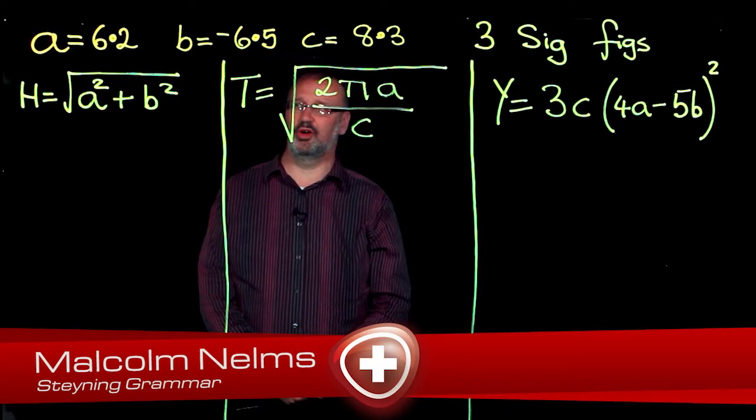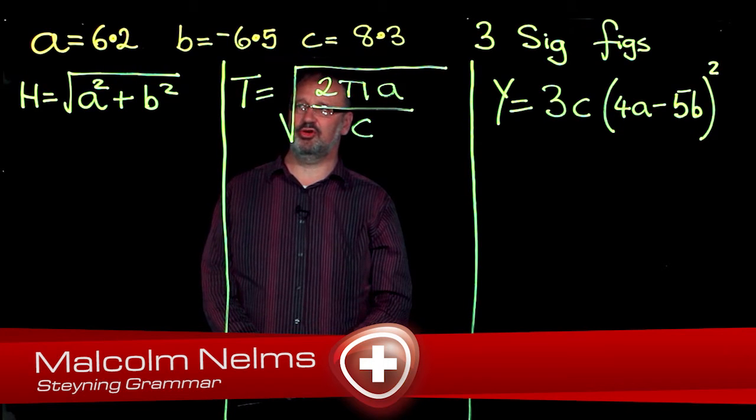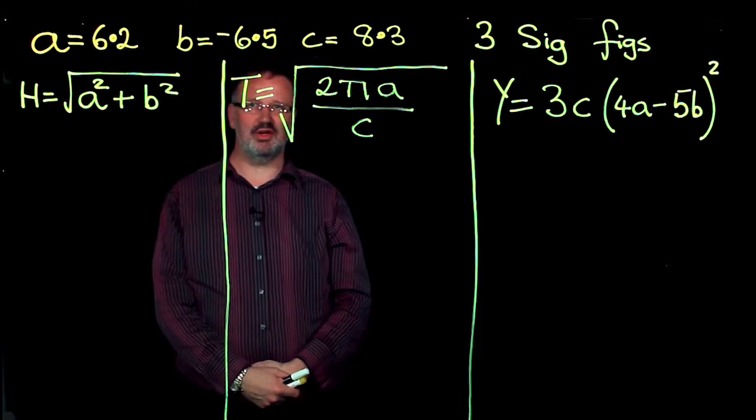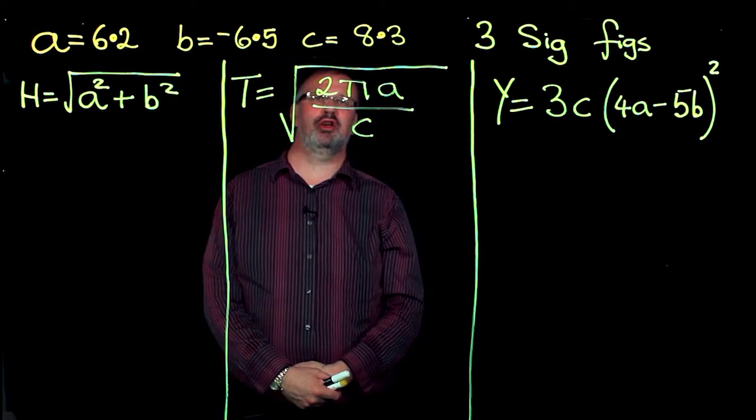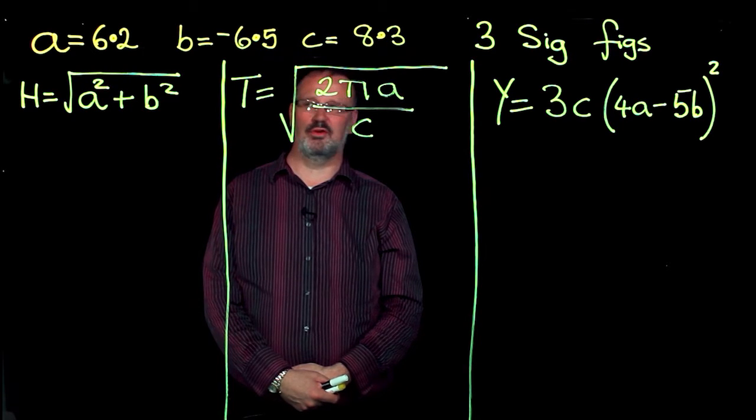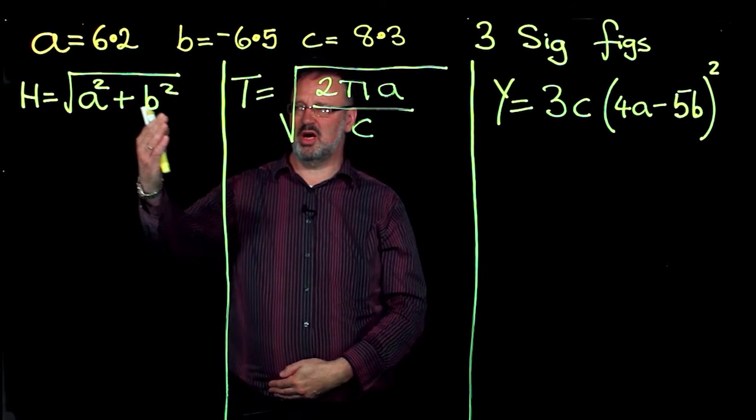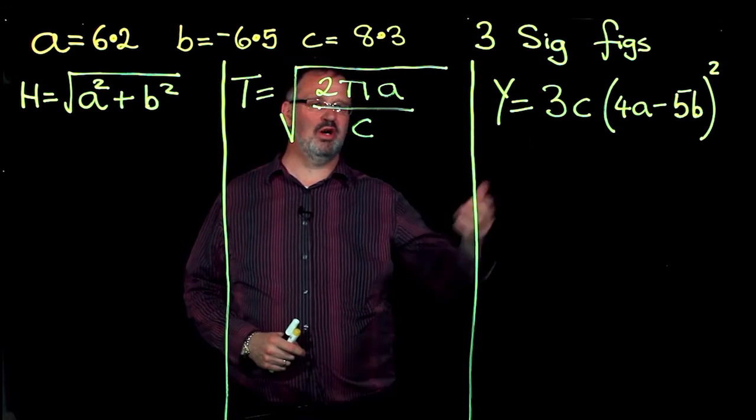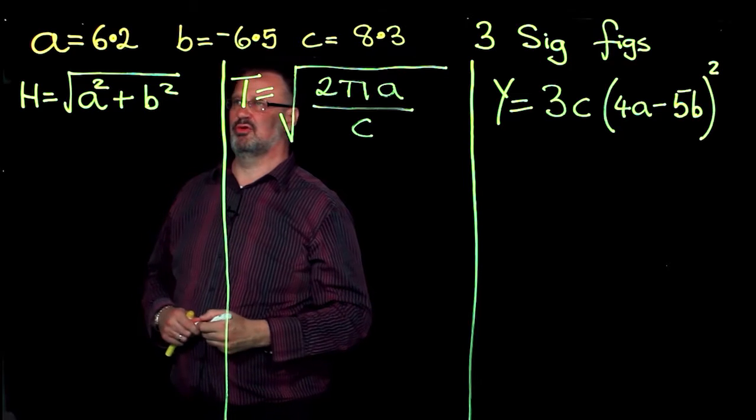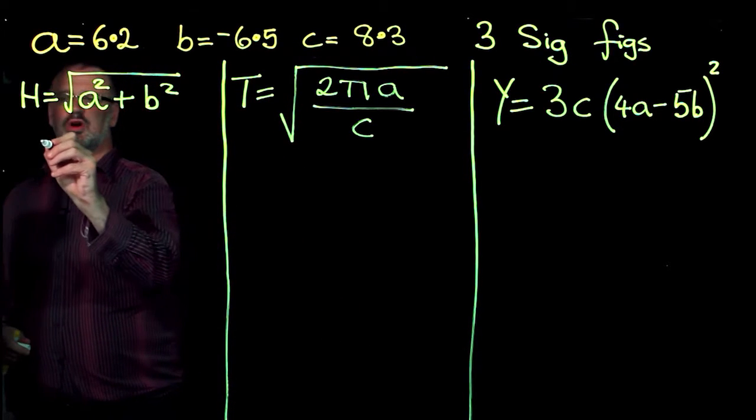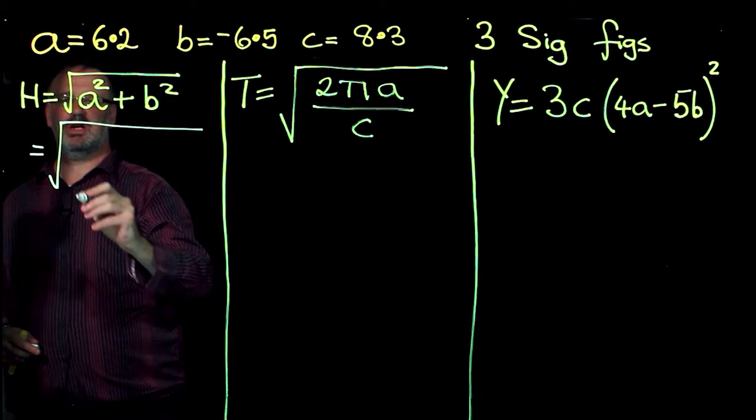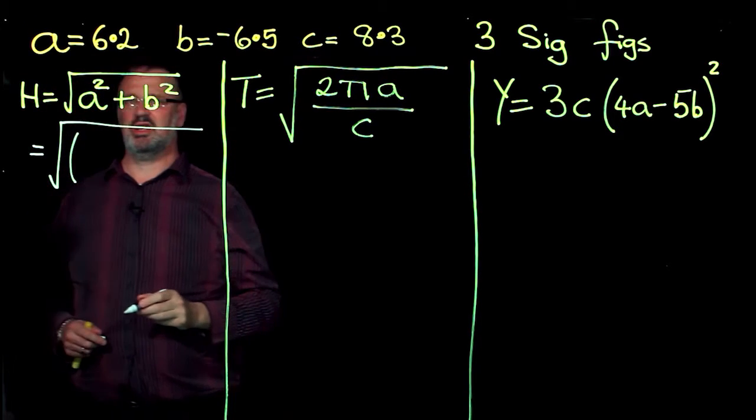Here we have three formulas into which I am going to be substituting A is 6.2, B is negative 6.5, C is 8.3, and I want all of my answers to three significant figures. Clearly with squares and square root signs and a square here on the end, I will be using a calculator to work out the various values. So let's look at this first one, equals, and when I put my square root sign into my calculator, I will get a bracket to start with.